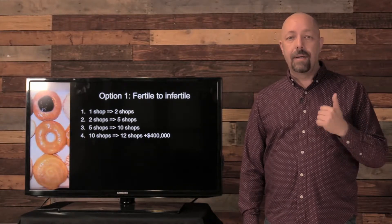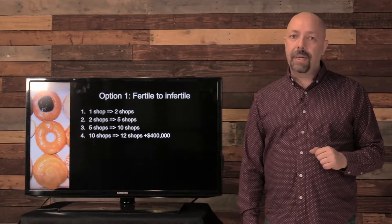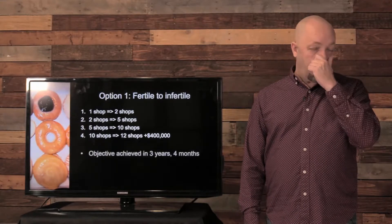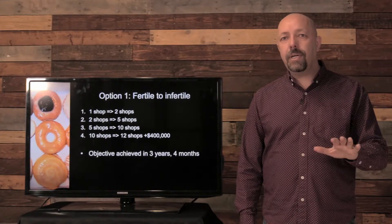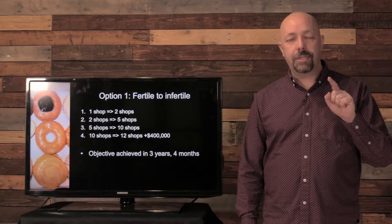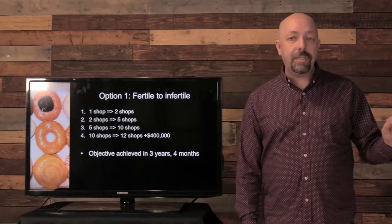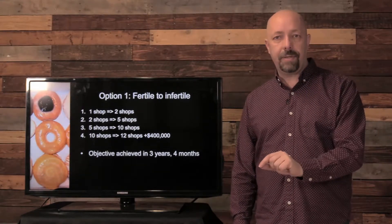And it will be just after year three that I'm going to be at ten shops and twelve shops. And by the end of that last year I'm going to also have a whole bunch of money in the bank. So we're going to get a donut shop in all twelve towns in just three years and four months if we start at the most fertile and move to the least fertile.